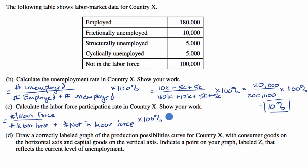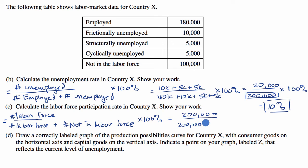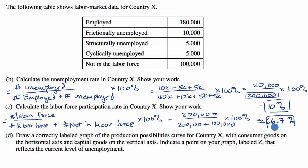So times 100%. Our labor force is going to be all of the employed or unemployed people, which is essentially 200,000. Divided by our labor force of 200,000 plus those not in the labor force, which is 100,000, times 100%. This is going to be equal to 2/3 times 100%, so 66.7% is our labor force participation rate.